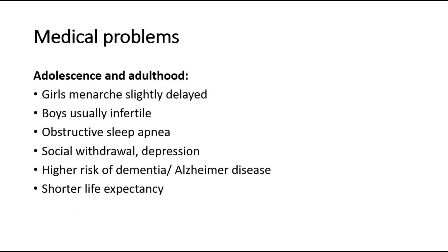In adolescence, for girls, menarche is slightly delayed, whereas boys are usually infertile in Down syndrome cases. Obstructive sleep apnea may be noted, as well as social withdrawal and depression. People with Down syndrome also have a higher risk of dementia or Alzheimer's disease.